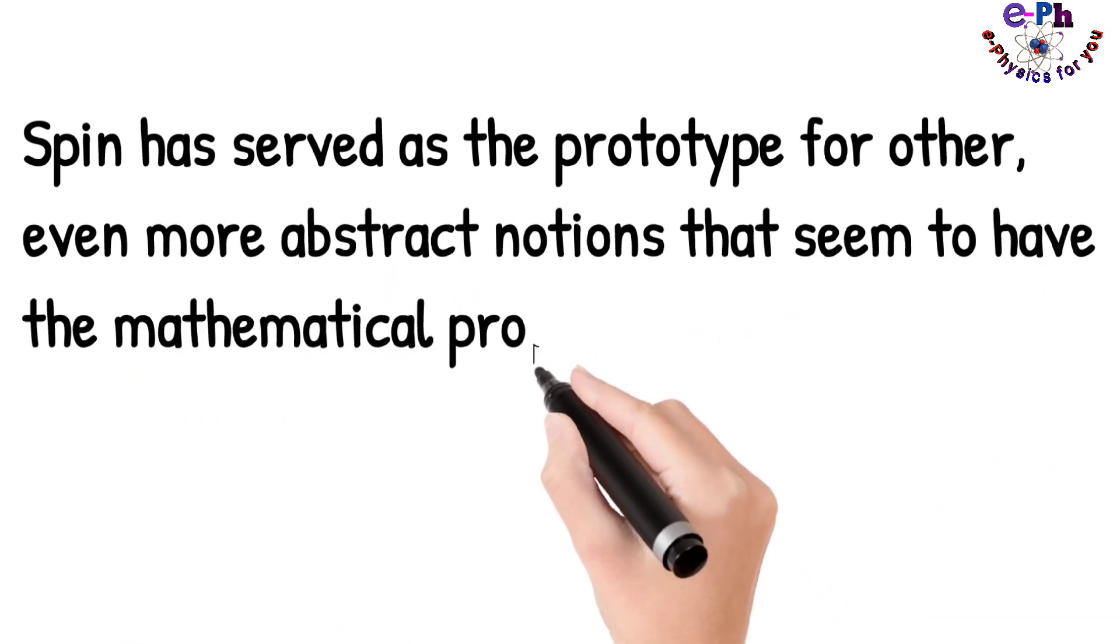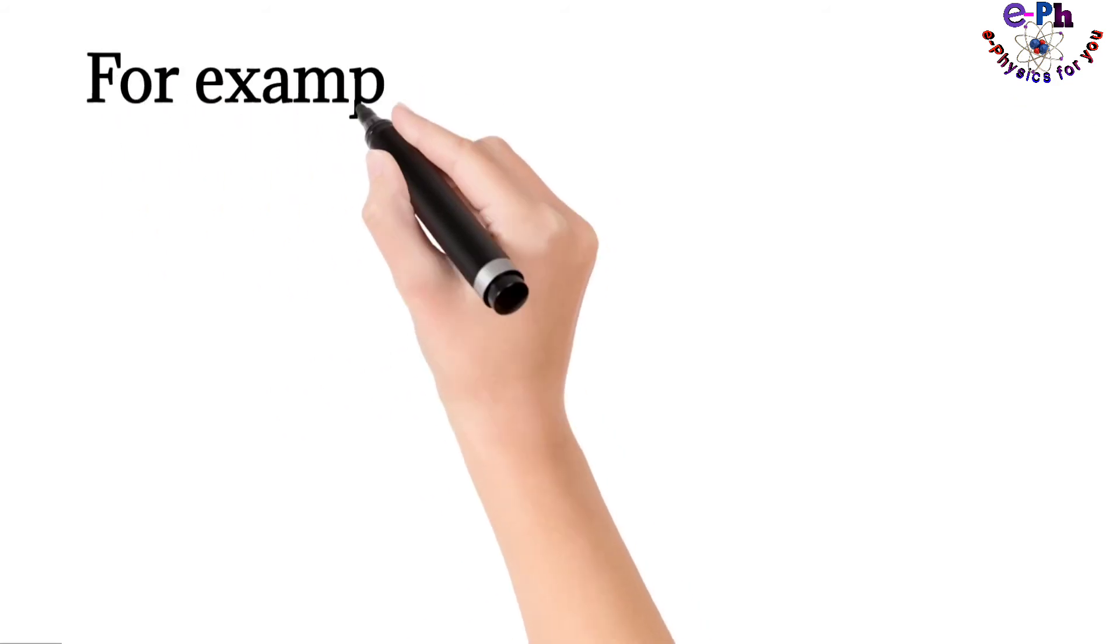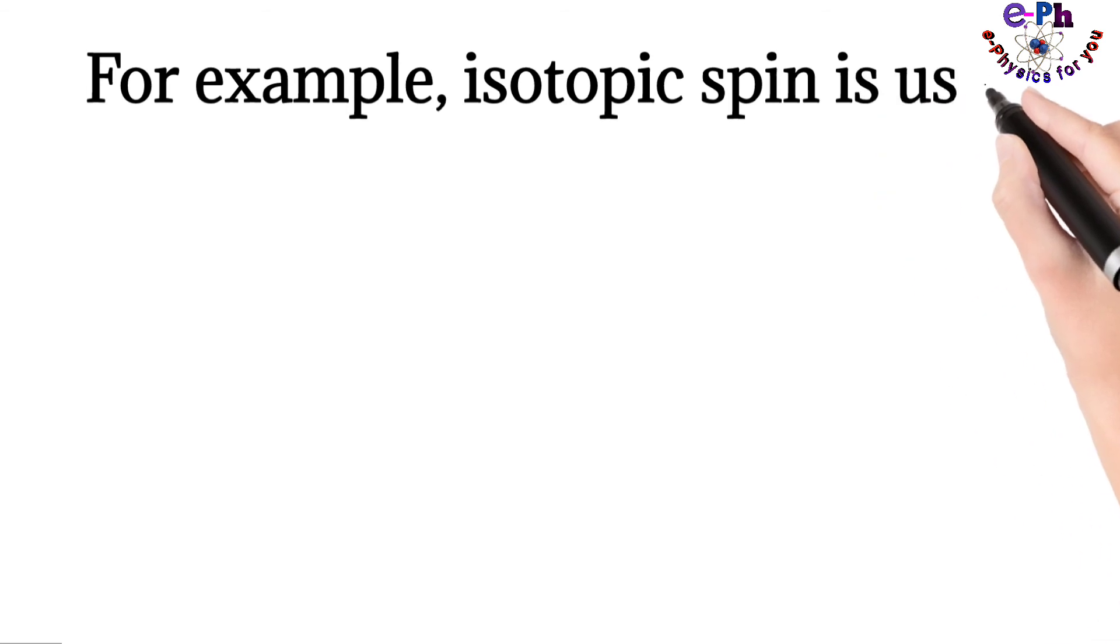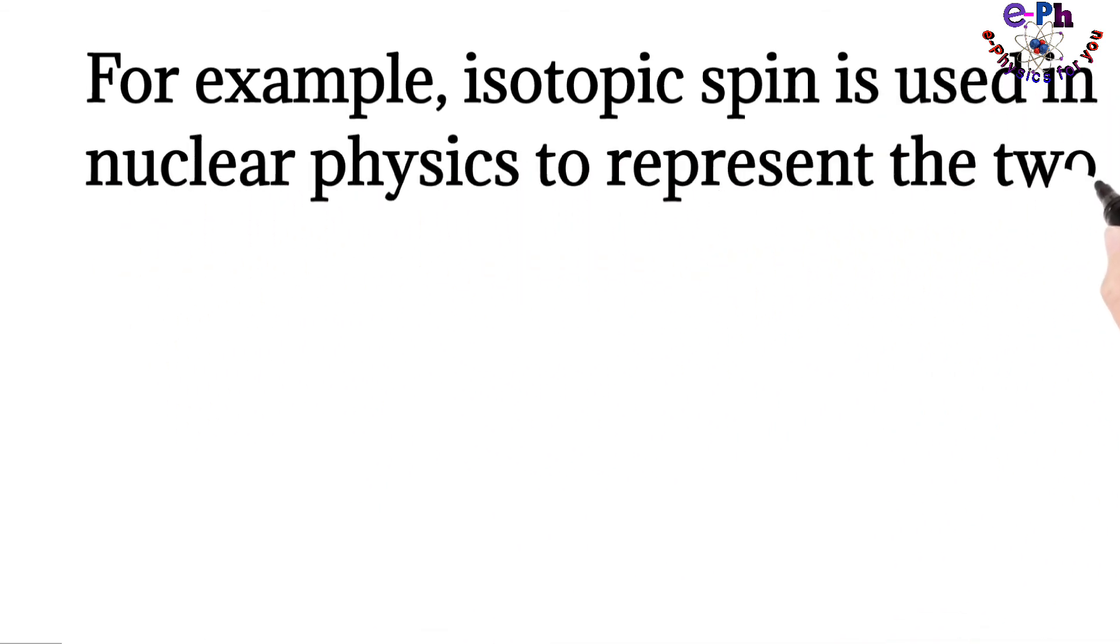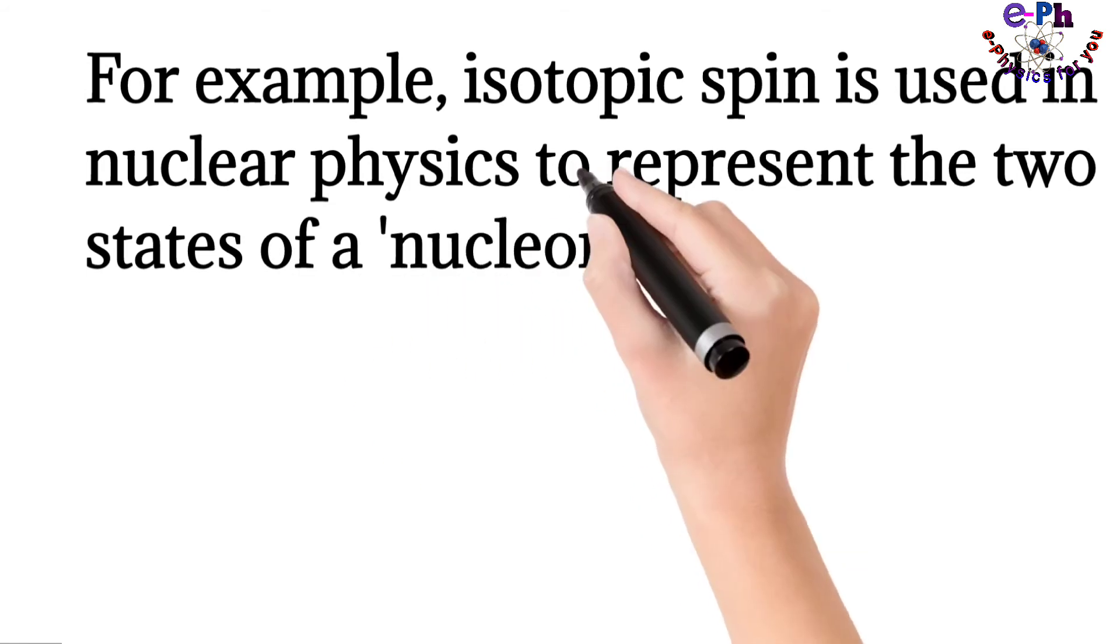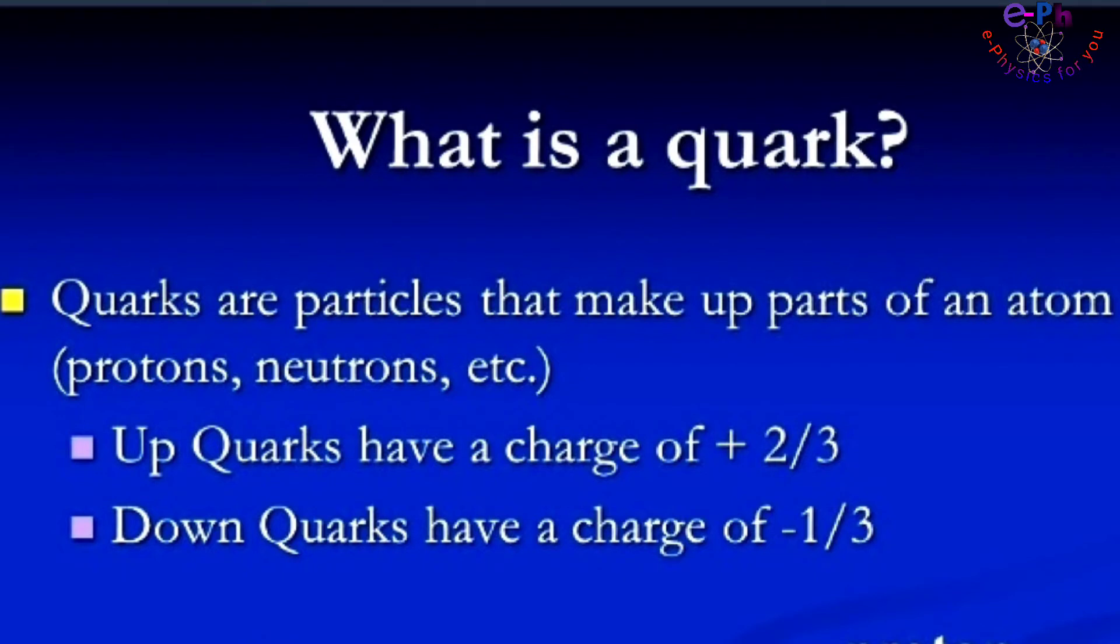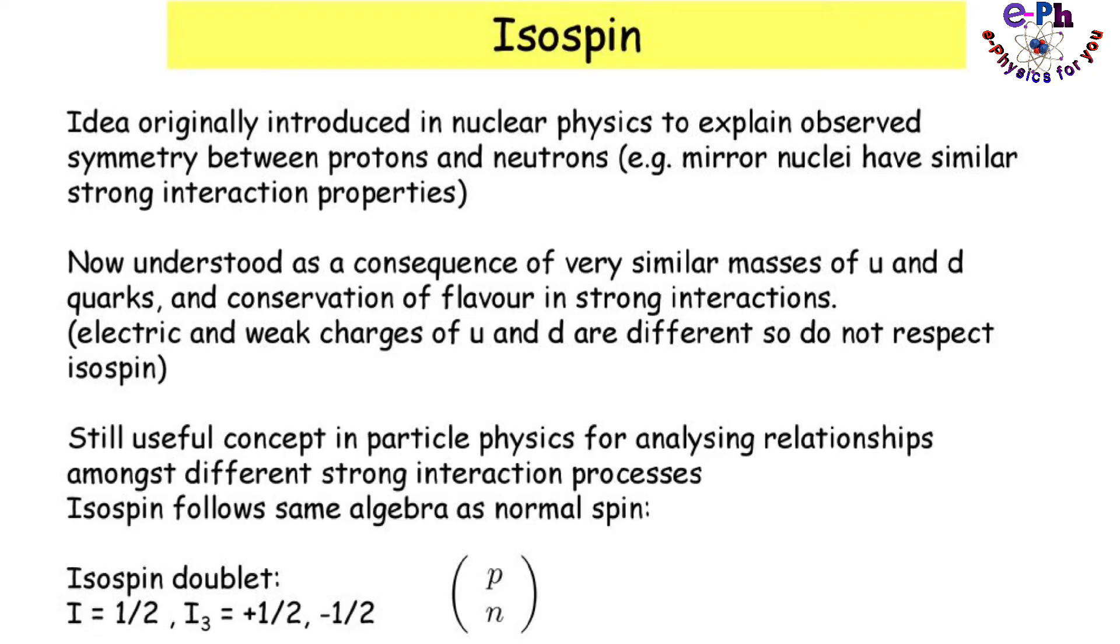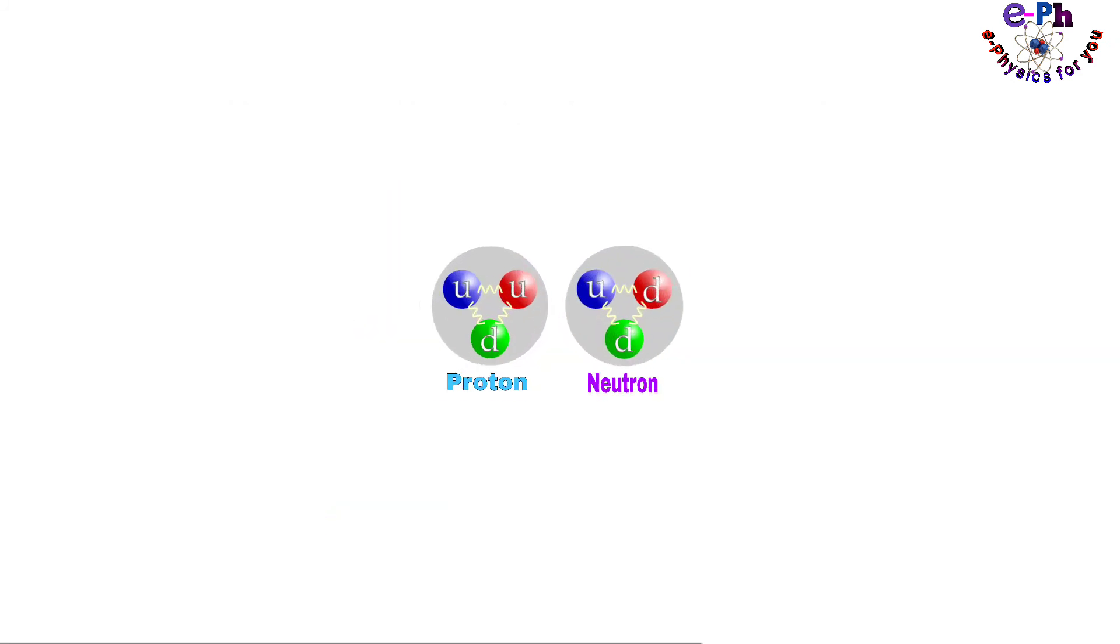For example, isospin is used in nuclear physics to represent the two states of a nucleon: the proton and the neutron. Similarly, quarks are referred to as isospin up and down that make up ordinary matter.